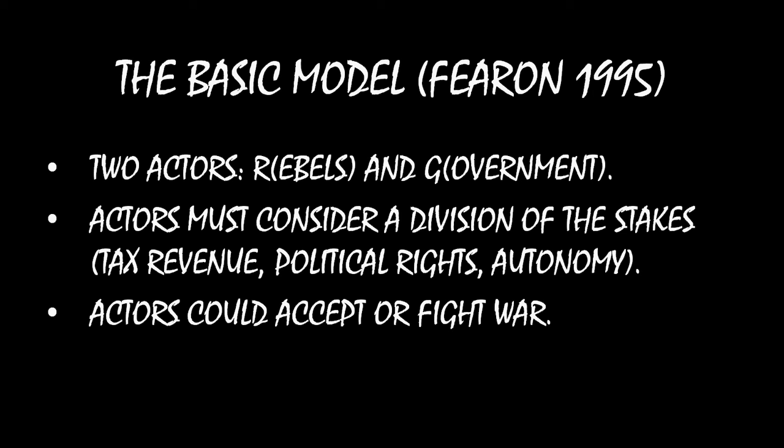The only important thing about this good they're negotiating over is that whatever the rebels consume, the government can't. For example, with tax revenue, whatever value of money the rebels get, the government can't consume that amount. And the same is true the other way around — whatever amount the government gets, the rebels can't consume. So there's some tension: whatever I consume, you can't consume. In this negotiation, we have two very simple choices: we can either accept an agreement or we can fight a war.